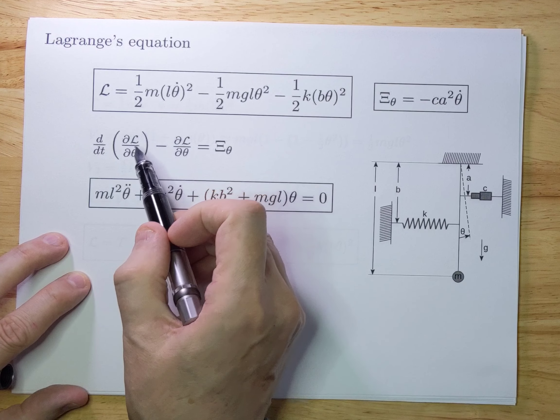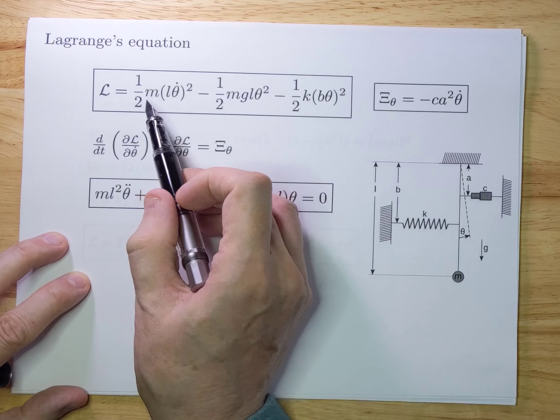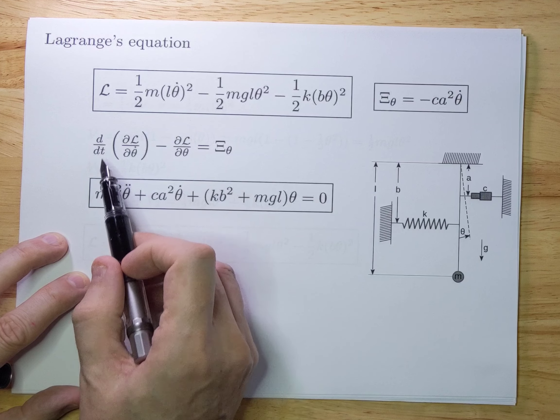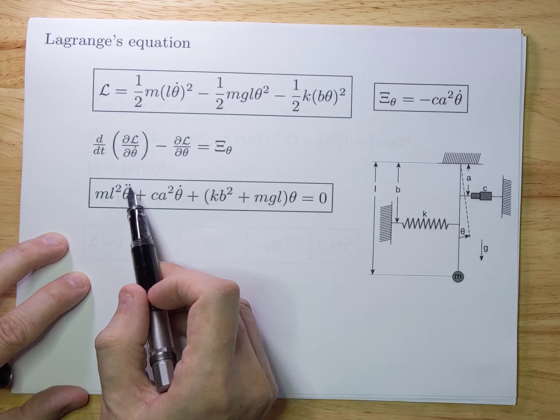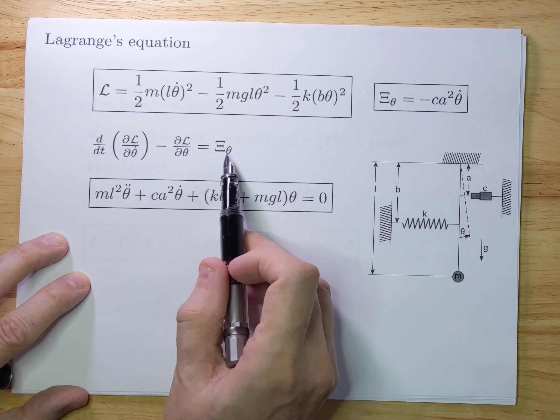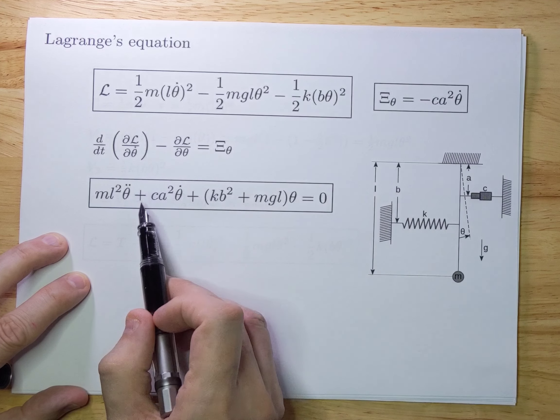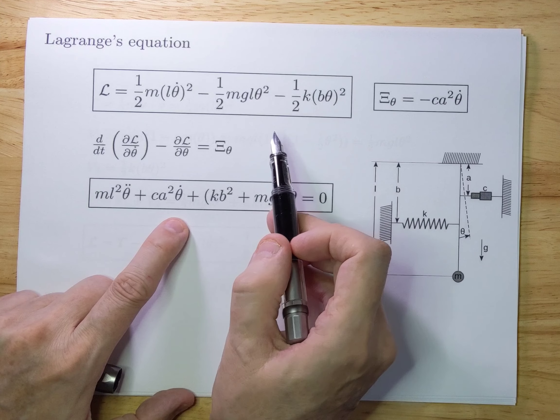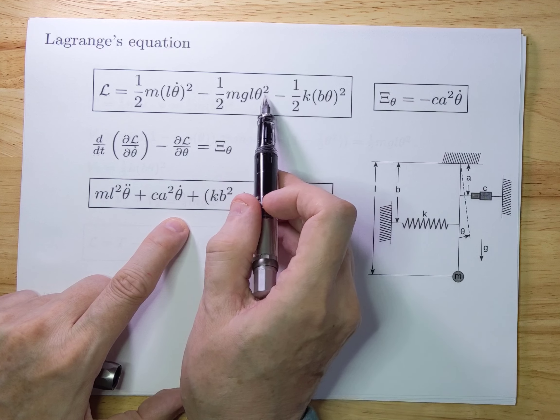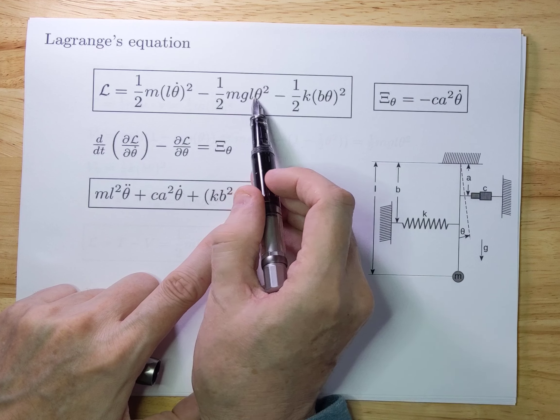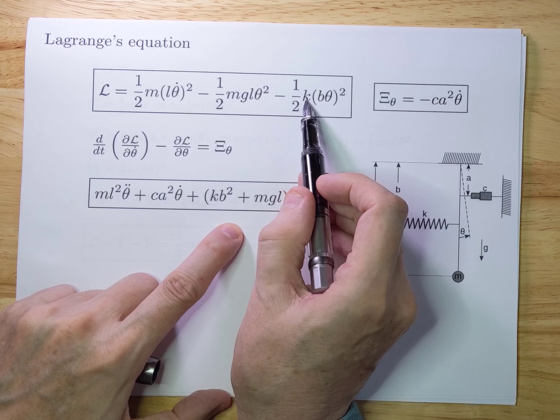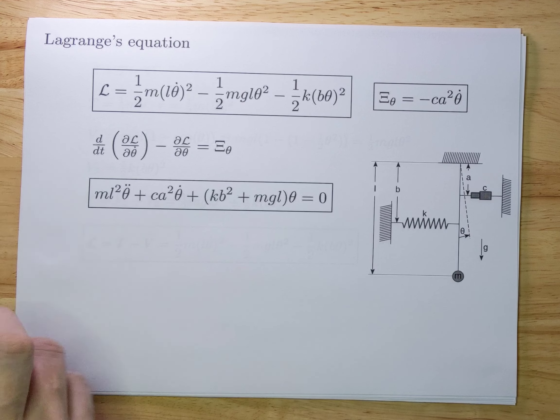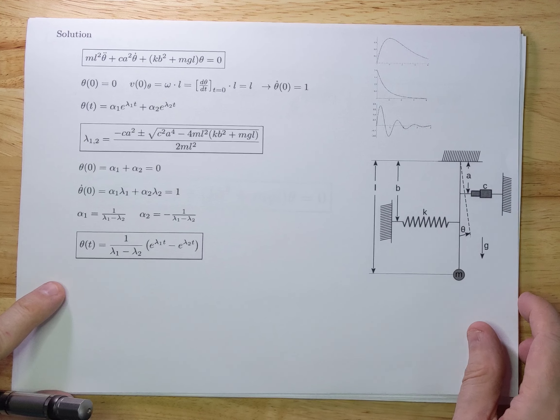So you differentiate the L towards θ̇. You get M times L squared θ̇. You differentiate that towards T, and you get this term. M L squared θ̈. The generalized force here is stated here on the left. I move that to the right, so it becomes a plus. Because I make it an equal sign here, equals zero. And then the potential terms, the ∂L/∂θ terms. Those two terms, you differentiate to theta. And you get M G L theta for this one, if you differentiate. And K B squared theta for that term, if you differentiate. So here you have your differential equation. Linear differential equation of second order, which you can easily solve.